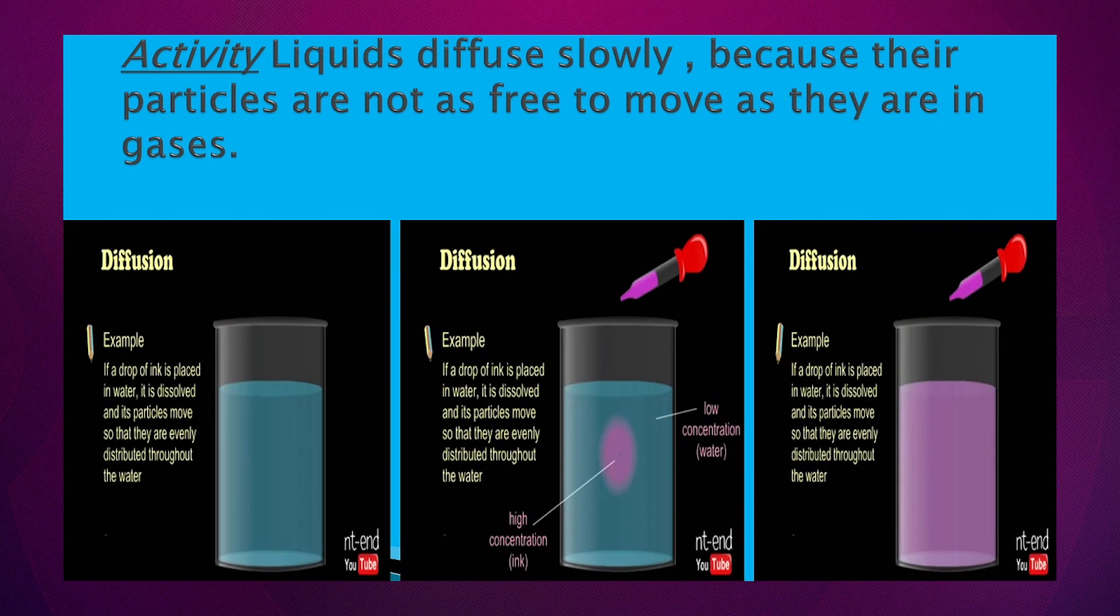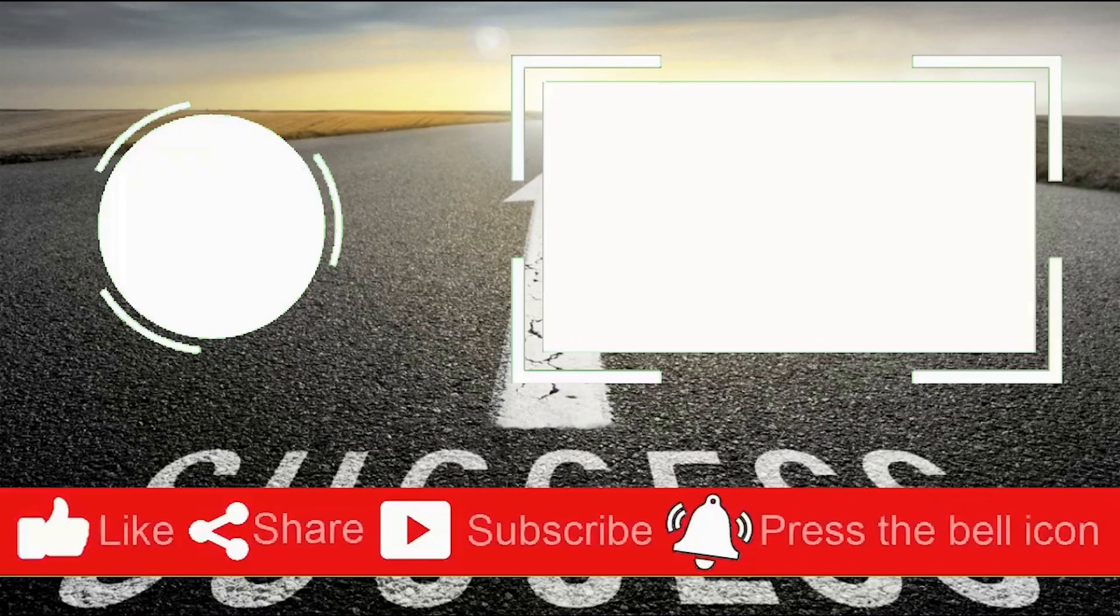Toh next activity hum ne leni hai, do liquids agar hum do liquids ko mix karein, toh diffusion kaise hogi. Is example mein hum ne liya hai pani ke andar hum ink drops dal ke dekh rahe hain. Jaise hum ne ink drop dali, toh hum ne dekha bilkul speed se ink jo hai woh pani mein mix hogi. Lekin utni speed nahi thi jitni jaldi do gases mix hogi thi, yarni ki do liquids ki speed thodi kam hogi, liquids ke case mein speed kam hogi diffusion ki.